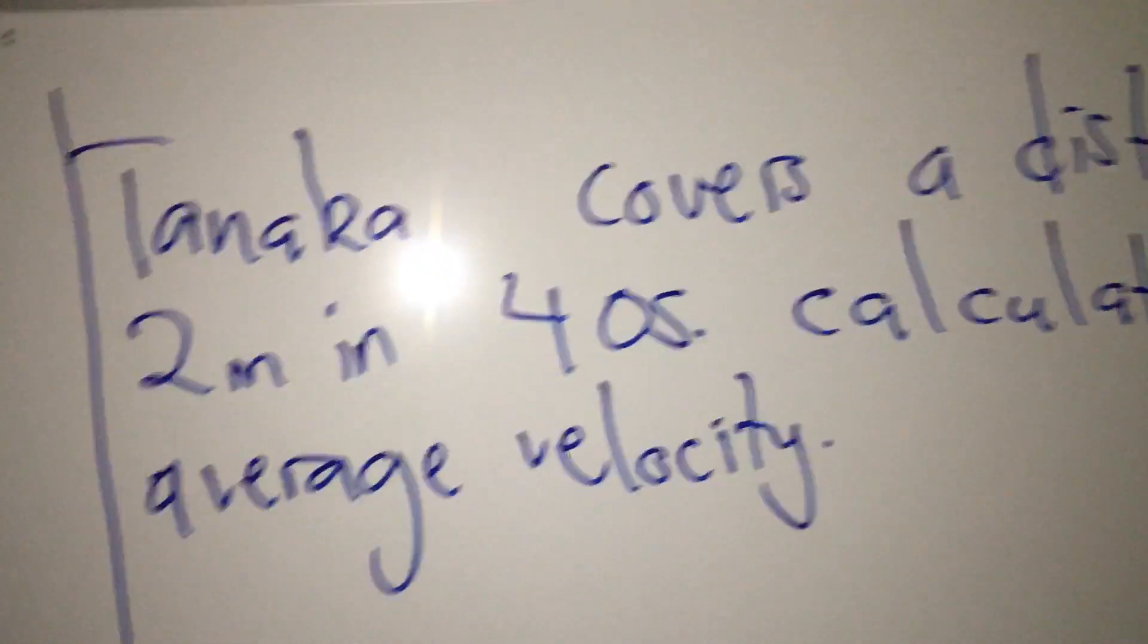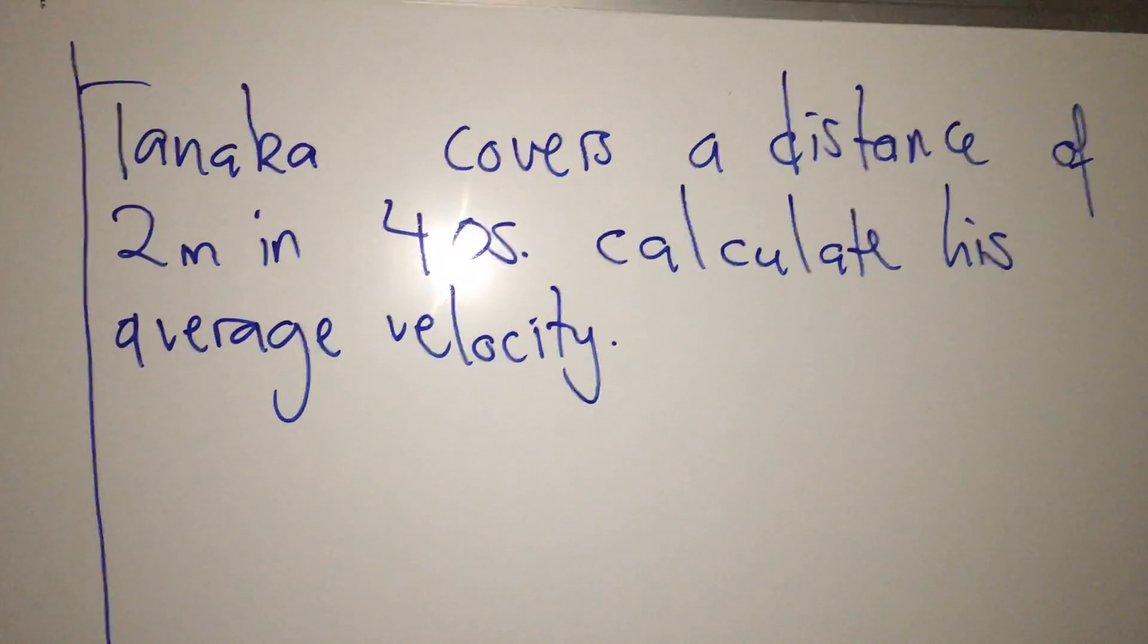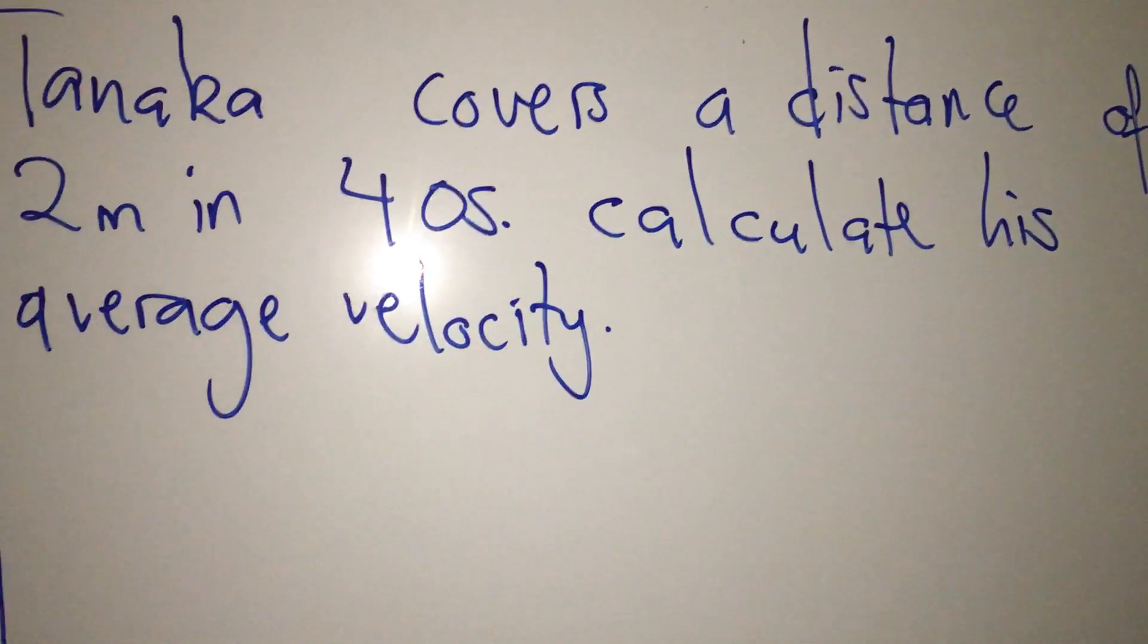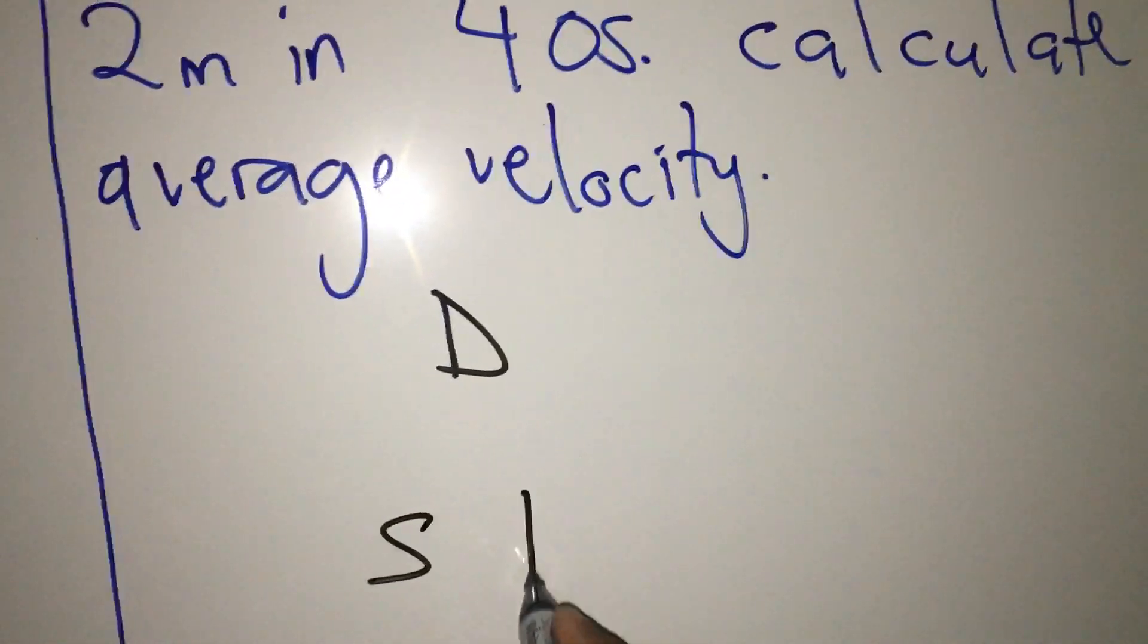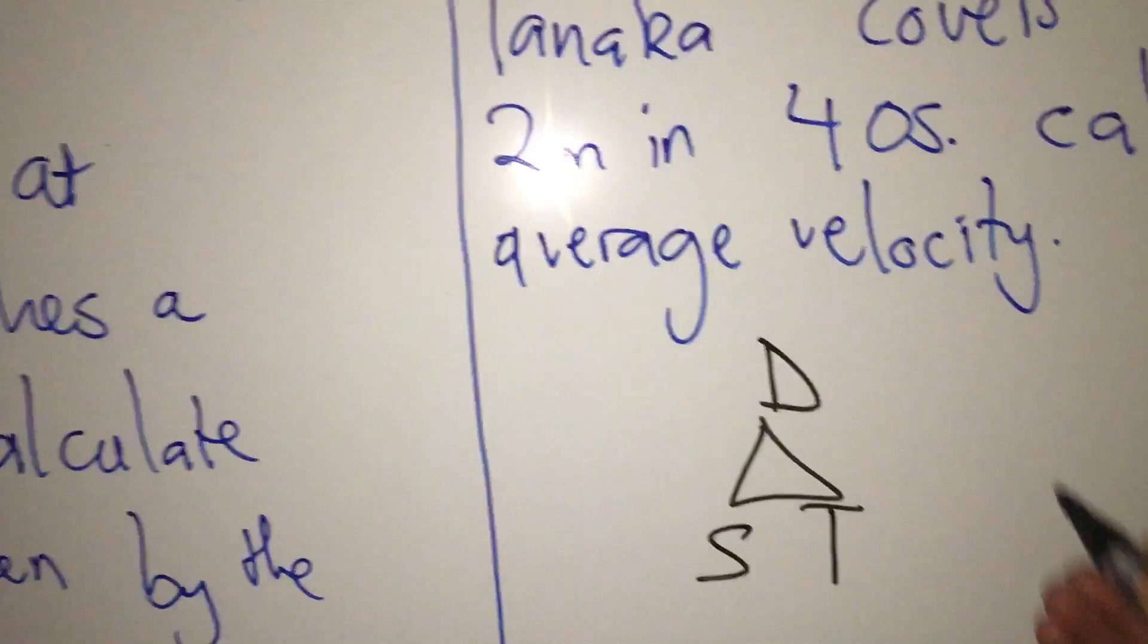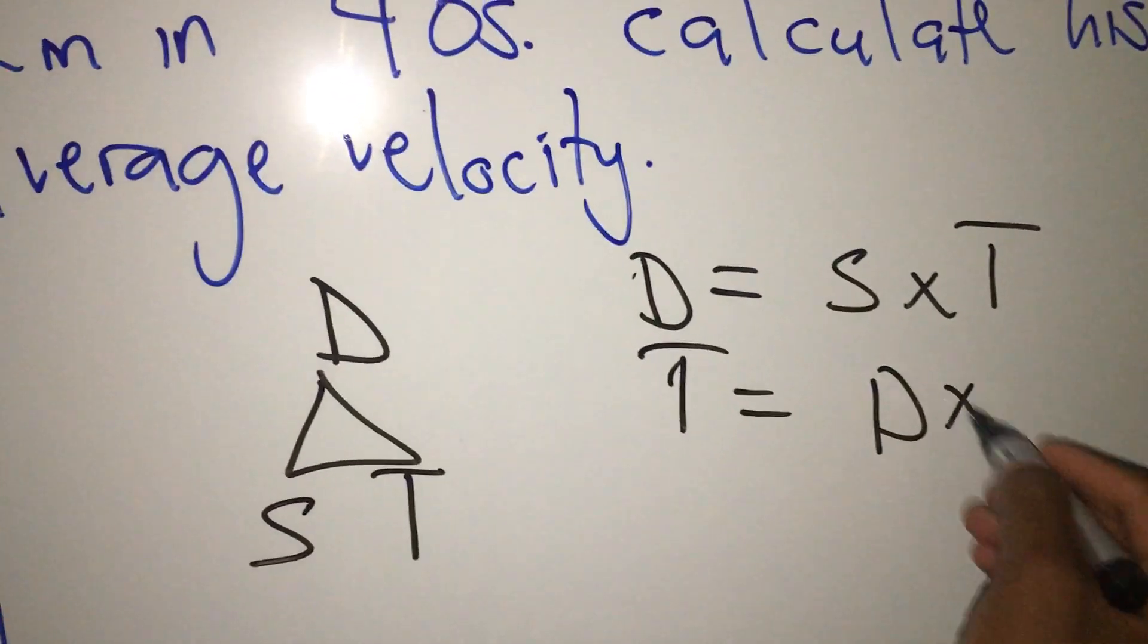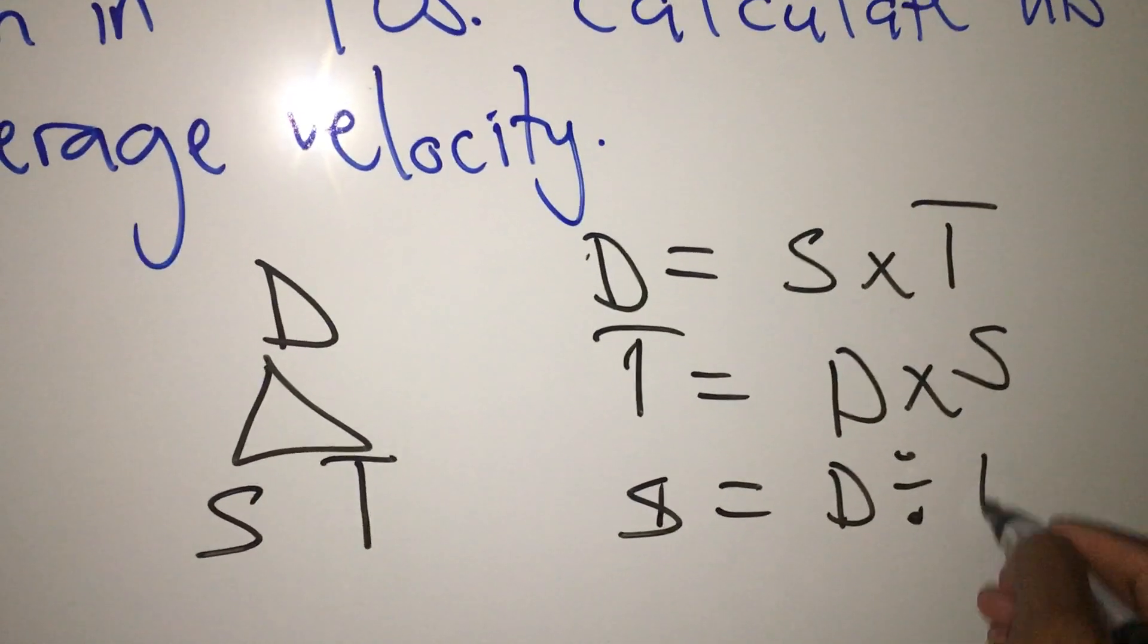Let's look at this question: Tanaqa covers a distance of two meters in 40 seconds. Calculate his average velocity. I gave you the formula last time for calculating average velocity. Alternatively, we can use the DST triangle. DST triangle means that distance equals speed times time, time equals distance divided by speed, and speed equals distance divided by time.